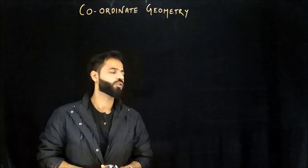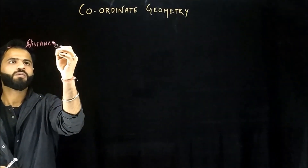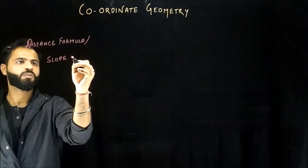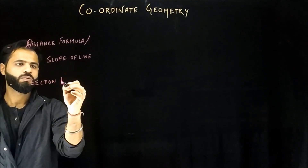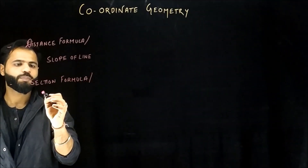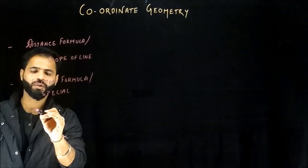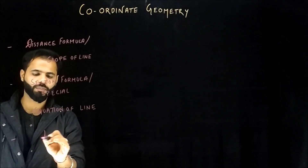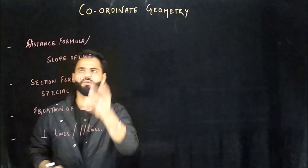Hello and welcome to the lecture series of coordinate geometry. We're going to talk about all the postulates of coordinate geometry. We'll start with distance formula and slope of line, then section formula and some spatial concepts. Further, we're going to talk about the equation of line, perpendicular lines, and parallel lines.